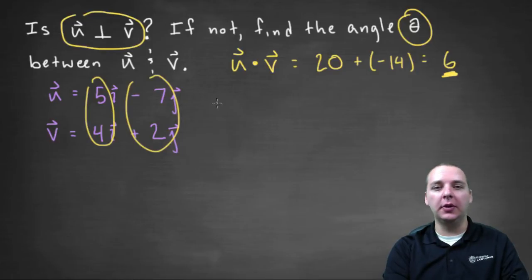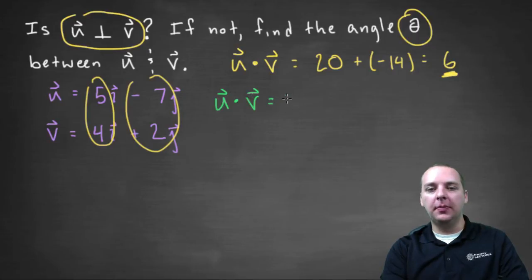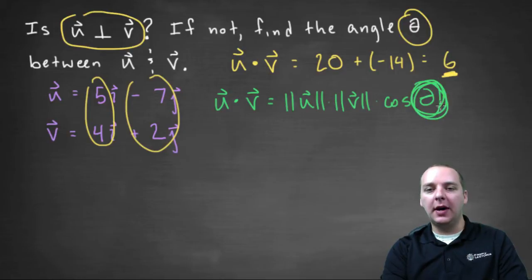So to do this, we're going to use another formula that we're familiar with. u dot v equals the magnitude of u times the magnitude of v times the cosine of the angle between them. So we're going to use this formula to find this angle theta right here. So the dot product we've already found, that was six.